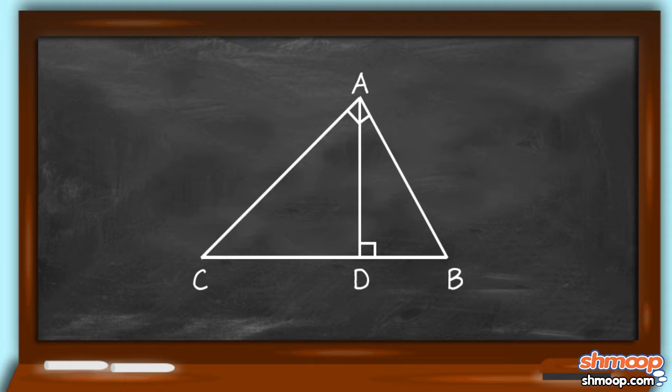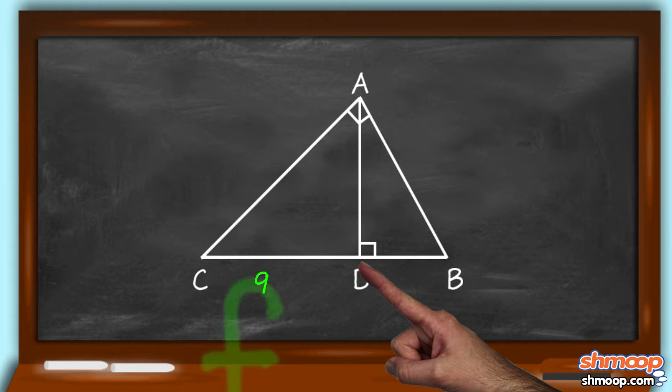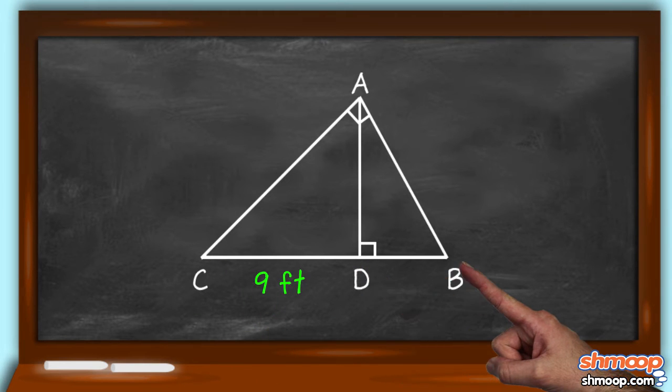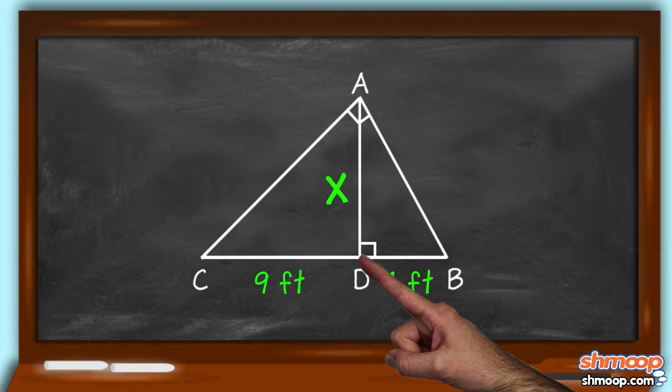She gives you a hint. The length from C to D is 9 feet, and the length from D to B is 4. What is her height?